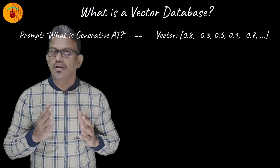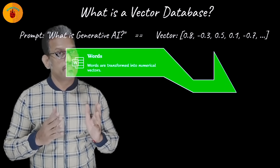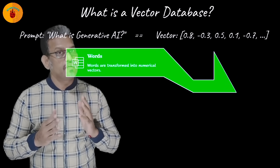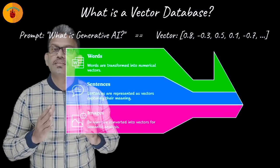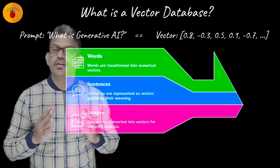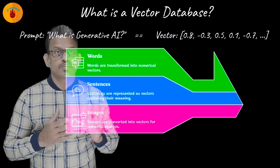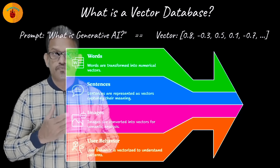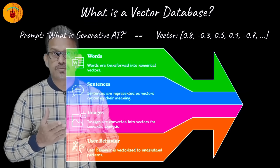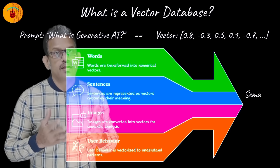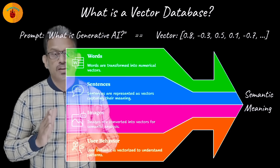Words are transformed into numerical vectors. Sentences are represented as vectors capturing their meaning. Images are converted into vectors for semantic analysis. User behavior is vectorized to understand patterns and derive semantic meaning.